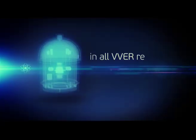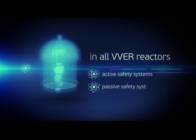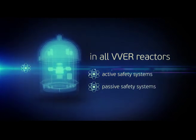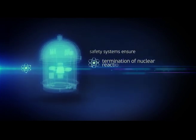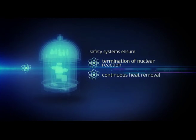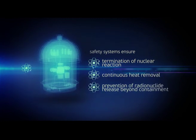All VVER reactors include passive and active safety systems, which combination ensures meeting three basic goals in case of emergency: shutdown and termination of the nuclear reaction, provision of continuous heat removal from the nuclear fuel and power unit, and prevention of radionuclide releases beyond the containment in case of emergencies.